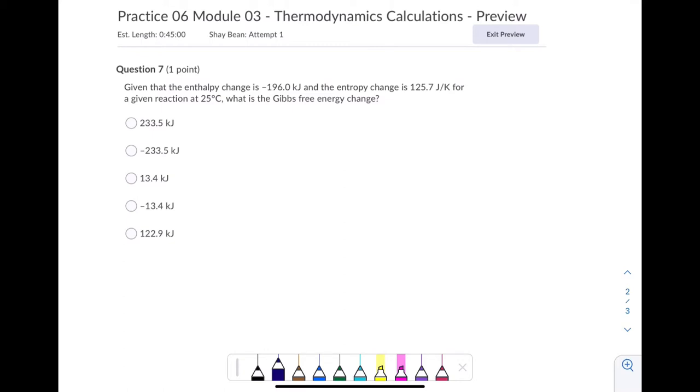You want to be able to calculate or look at the formula that shows the relationship between enthalpy change, entropy change, and Gibbs free energy change. And that formula is delta G equals delta H minus T delta S.